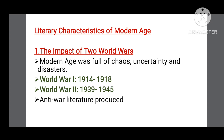The first literary characteristic is the impact of two wars. The modern age was full of chaos, uncertainty, and disaster because of World War One and World War Two. World War One started from 1914 and lasted up to 1918, while the Second World War started from 1939 and ended in 1945. As a result, anti-war literature was produced. These wars caused large-scale bloodshed, many people lost their lives, and soldiers who returned were emotionally unstable. These wars shattered all social institutions, and society became fragmented.